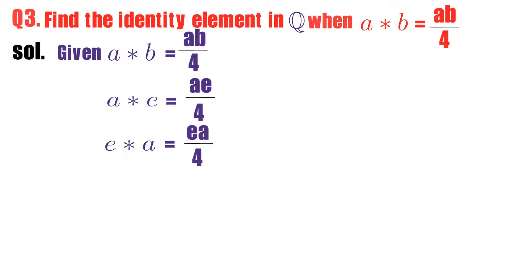Observe that a star e is same as e star a. Just think - ae is same as ea. So we can easily say that a star e equals e star a. See, whenever you are finding identity element, first you confirm that a star e is same as e star a.